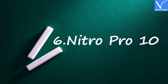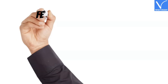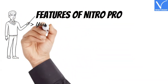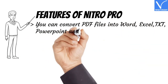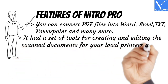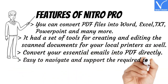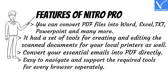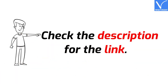Number 6: Nitro Pro 10. Nitro Pro is used for both personal as well as business purposes. It offers a two-week trial. When it comes to heavy work editing, Nitro Pro is the best option. Features: you can convert PDF files into Word, Excel, TXT, PowerPoint, and many more; it has a set of tools for creating and editing scanned documents for local printers; convert essential emails into PDF directly; easy to navigate and supports required tools for every browser separately. The price of Nitro Pro is exhibiting on the screen. Check the description for the link.